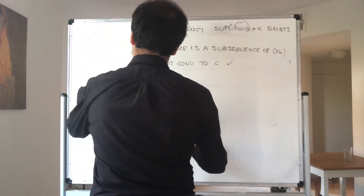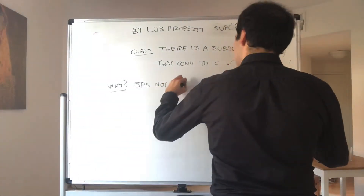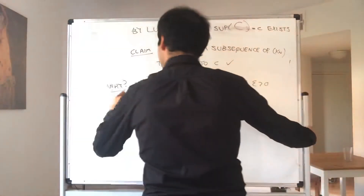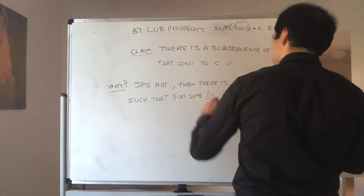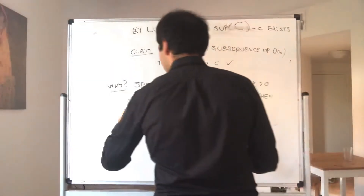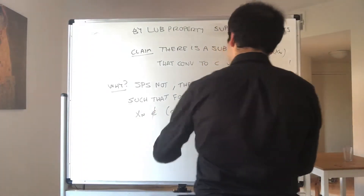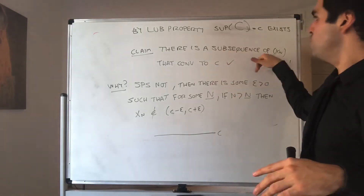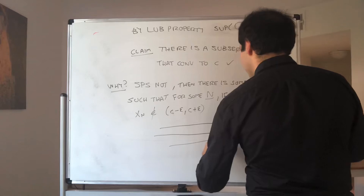Suppose not. What would that mean? It means that there is some epsilon such that eventually, for some capital N, if n is bigger than N, then the sequence is outside the good region (c − ε, c + ε). Let me illustrate this: this is c, and if there's no subsequence converging to c, the sequence itself is eventually outside the region (c − ε, c + ε).